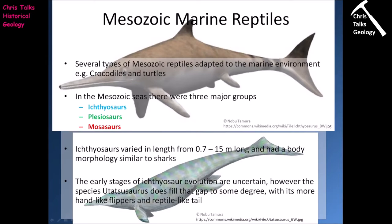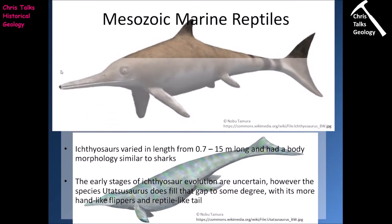The ichthyosaurs are the first group we're going to look at. Ichthyosaurs varied in length from about 0.7 metres to 15 metres long, and they had a body morphology similar to a shark — a very elongate, streamlined body, obviously a tail for propulsion, fins for steering, and a mouth stuffed with teeth for grabbing food.